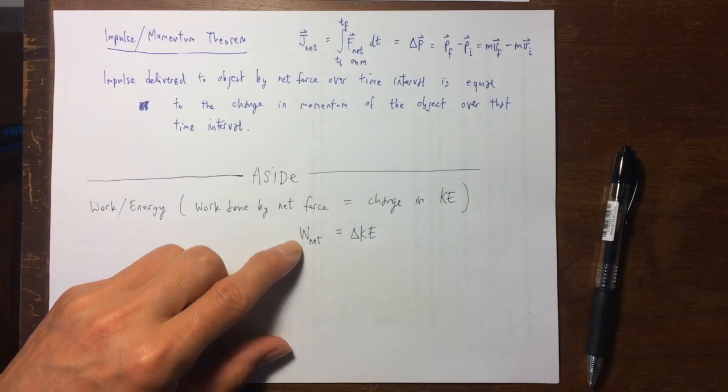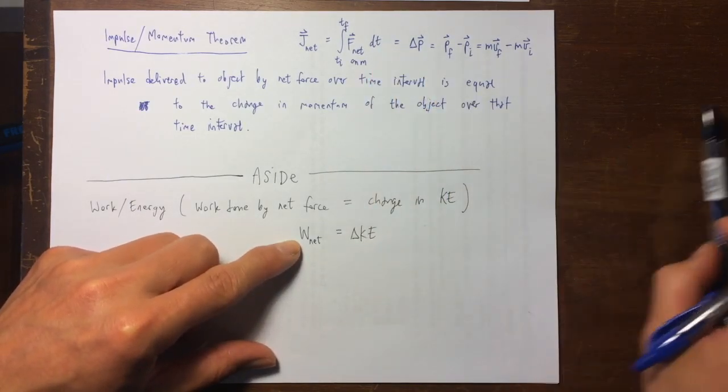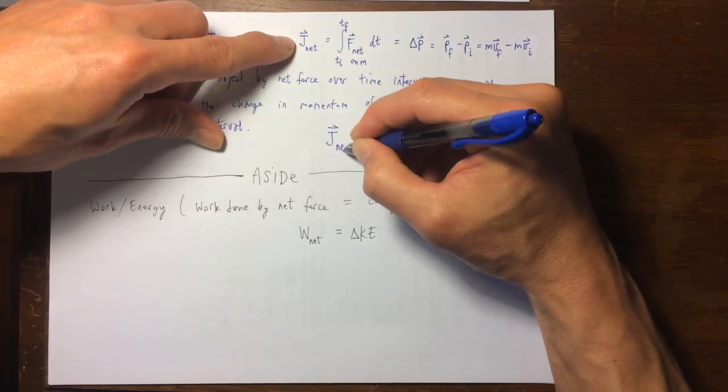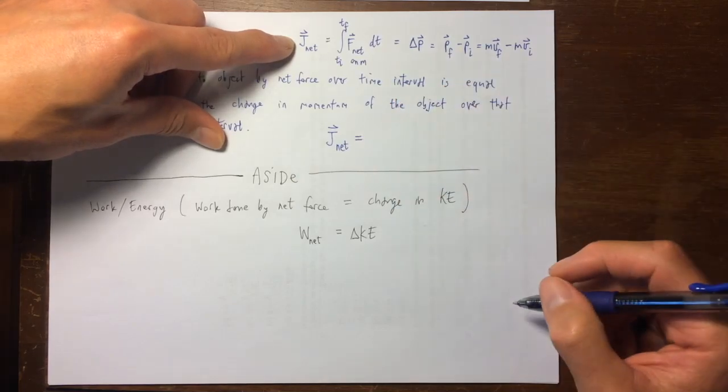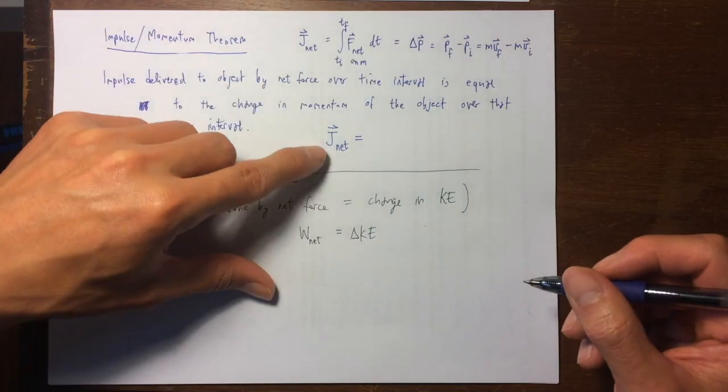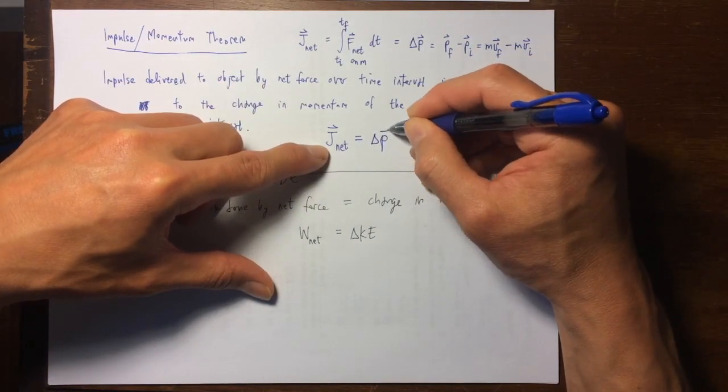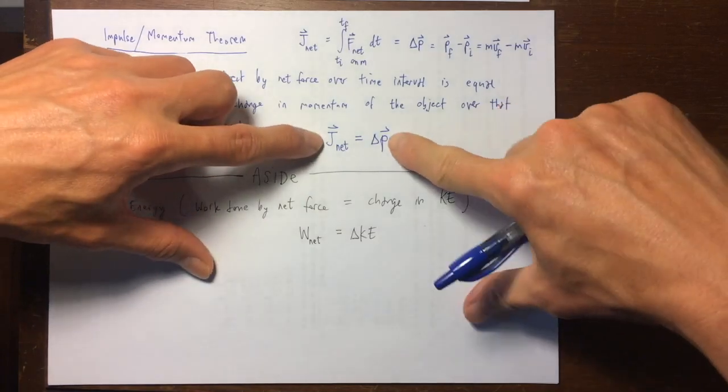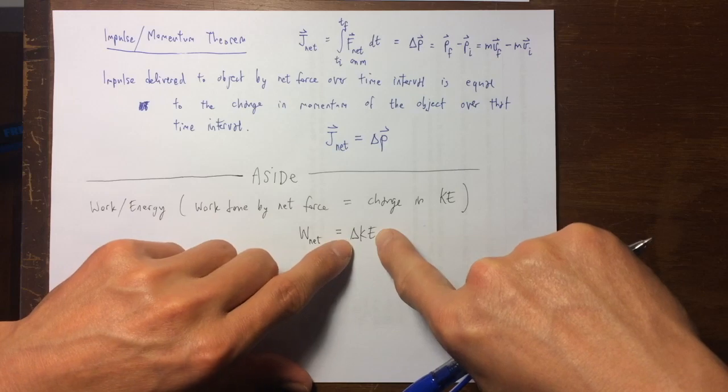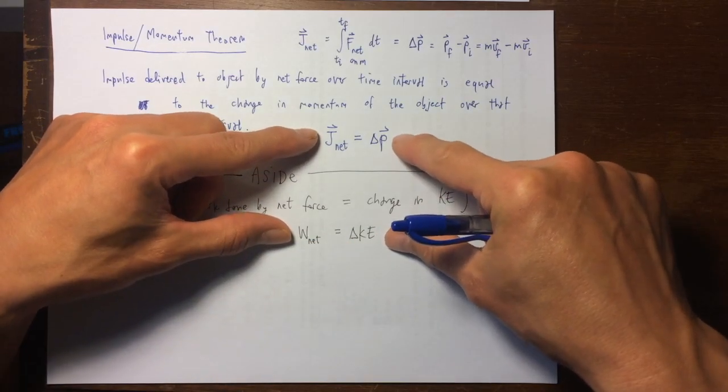And what that looks like is here's the work done by the net force, and it is equal to the change in the kinetic energy. And I'd like you to notice the parallel between, if you let me take the left hand side here, this is the net impulse delivered to the particle or done to the object of mass m, it's equal to delta p. The impulse momentum theorem and the net work changes kinetic energy theorem, look at the similarity between these two things.